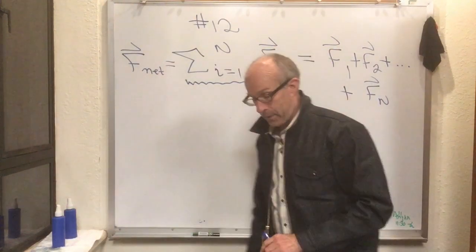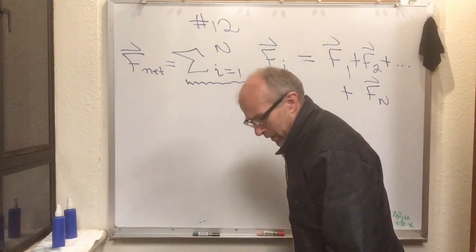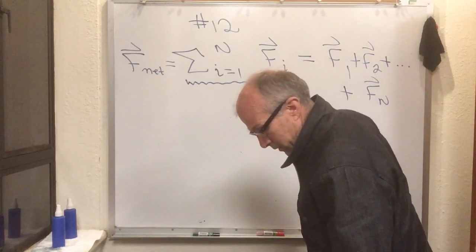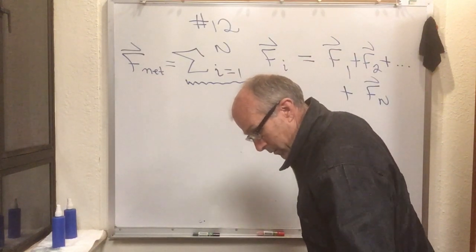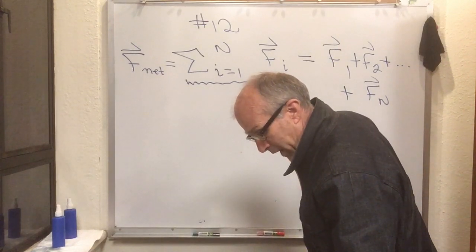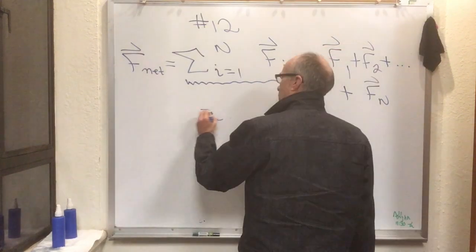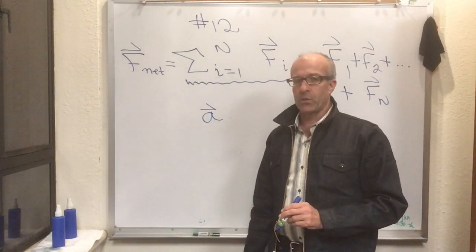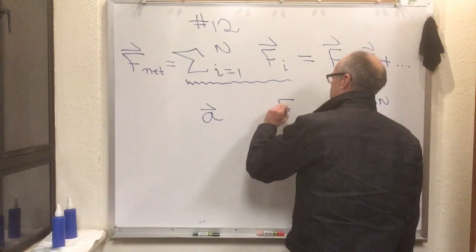The next thing is, well what does happen to it? And this is now popping ahead all the way to section 5.5, where Knight says, well the acceleration of a particle is what is related to F net. And so you take F net.